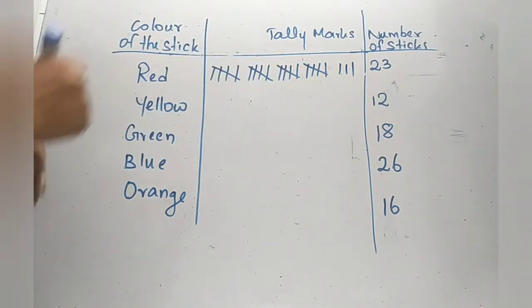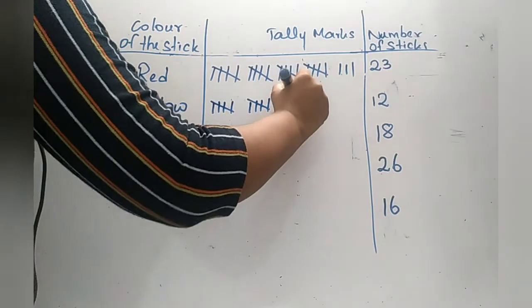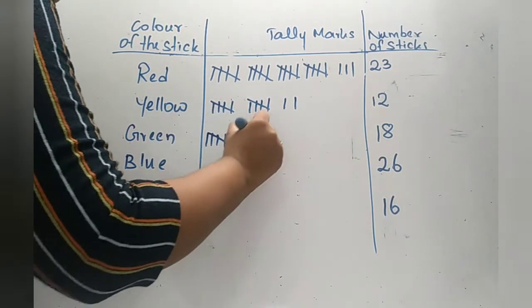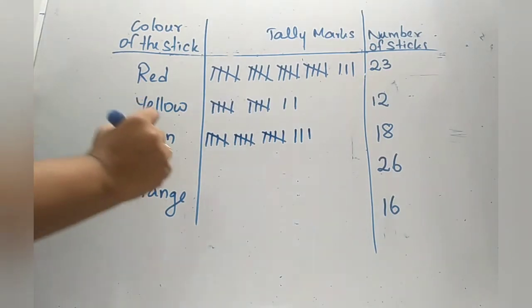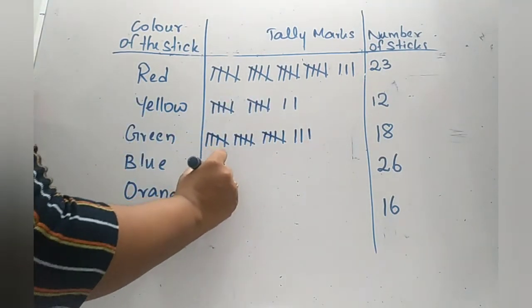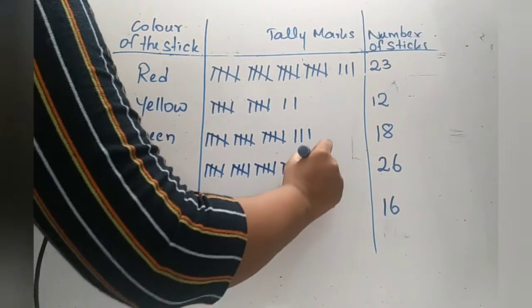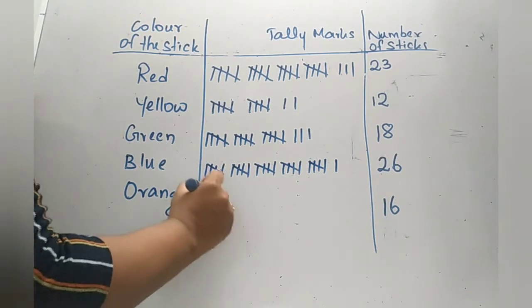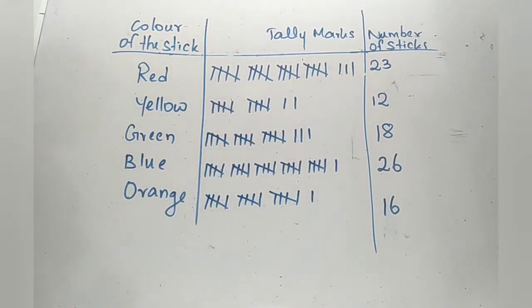The next one is 12. So 5, 10, 11 and 12. Next one is 18: 5, 10, 15, 16, 17 and 18. Let's move on to the next one which is 26: 5, 10, 15, 20, 25 and 26. Last one is 16: 5, 10, 15 and one more which gives us 16.